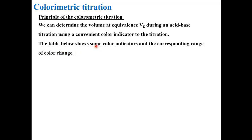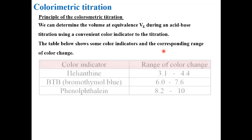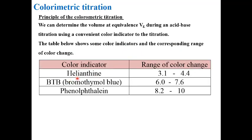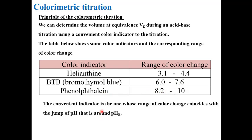Here we have a table showing some color indicators and their corresponding range of color change. For example, helium thymol has a range of color change between pH 3.1 and 4.1. Bromothymol blue starts to change at pH 6.2 up to 7.6. Phenolphthalein has its own range. The convenient indicator is the one whose range of color change coincides with the pH jump around pH equivalence on the curve.